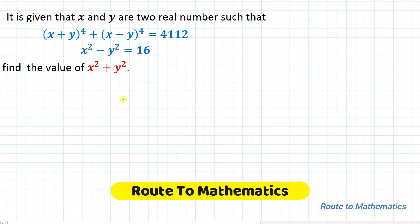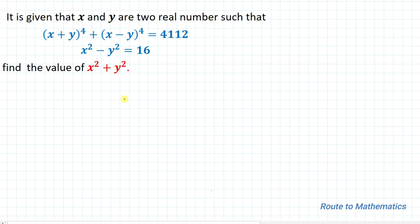Hello everyone, welcome to Root 2 Mathematics. In this video we're going to solve an interesting Olympiad question. The given question is: x and y are two real numbers such that (x+y)⁴ plus (x−y)⁴ equals 4112, and our second equation is x²−y² equals 16. We are asked to find the value of x²+y².